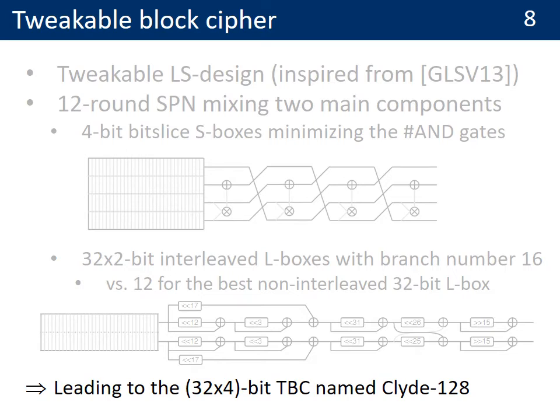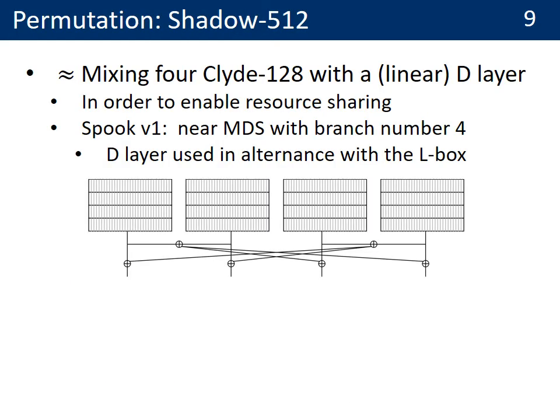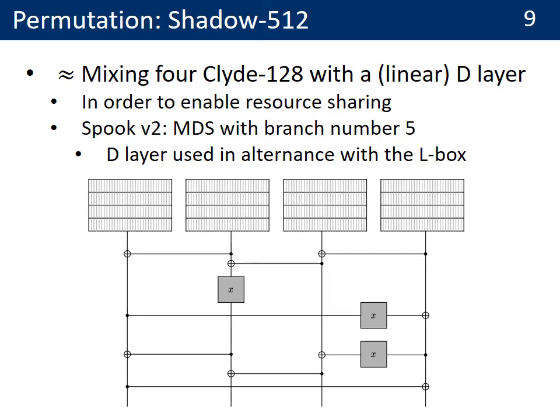These ingredients lead to a 128-bit block cipher called Clyde. As for the Shadow-512 permutation, it essentially works by mixing four Clyde ciphers, which enables resource sharing in hardware. For Spook version 1, the mixing was done with a near-MDS matrix with minimum latency and branch number 4. For Spook version 2, we rather use an MDS matrix with branch number 5. In both cases, the D layer is used in alternation with the L-box layer.